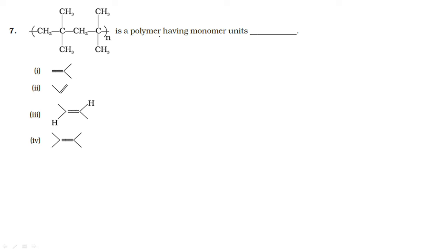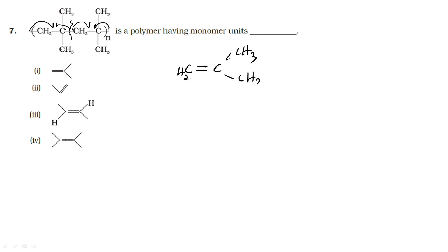The next question gives a polymer structure and asks to identify the monomer. By identifying the repeating unit — breaking the chain — the monomer is CH2=C(CH3)2 (isobutylene/2-methylpropene). Option A is our answer.